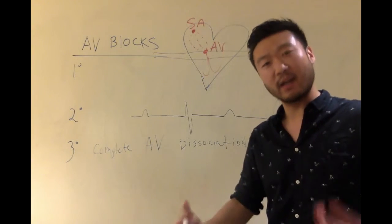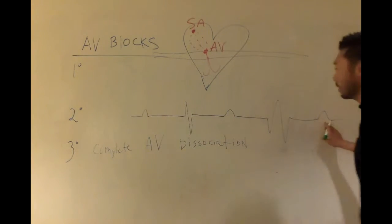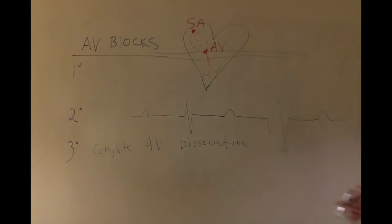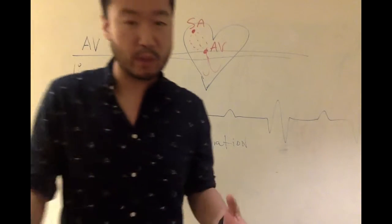So how does this look on the EKG tracing? You're going to see P waves. Boom, boom, boom. You're going to see QRSs. Boom, boom, boom. But they're not going to be communicating. There's no relationship between the two.